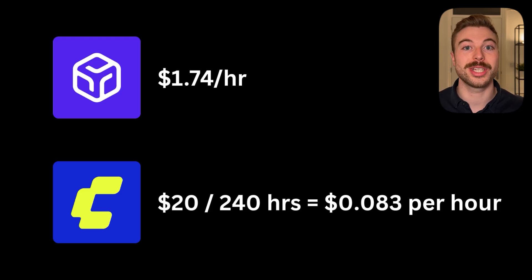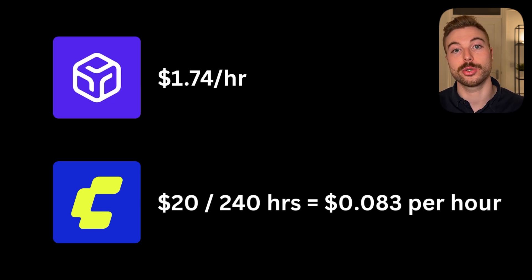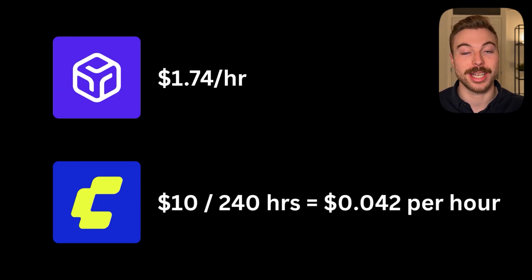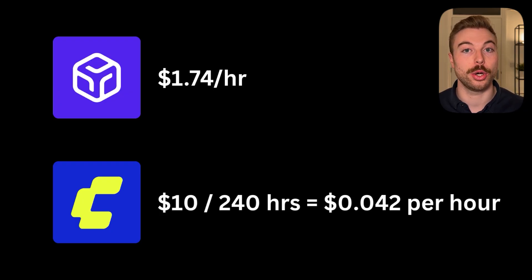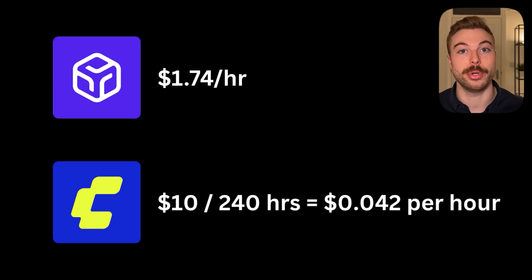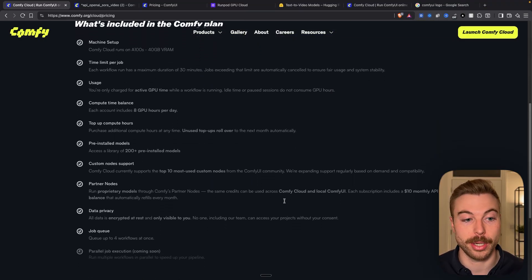That also includes $10 of API credits we can use with closed source image and video models like Sora 2 or VO3 that we can't natively install like open source. If we take the $10 away and divide the remaining $10 subscription cost by 240 hours, that brings the cost per hour down to $0.042 — massively cheaper compared to platforms like RunPod.io. And it's not like you're compromising on anything, because we'll still have the latest available models to use.